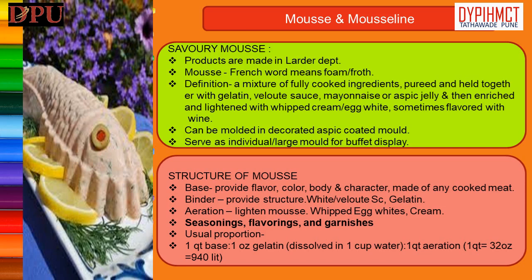2. Binder: It provides structure to the finished product, accomplished by inclusion of gelatin or aspic jelly. Flavorful fat like butter contributes structure as it cools. The following ingredients or sauces are used as a binder: white sauce, velouté sauce, mayonnaise sauce, and gelatin. 3. Aeration or lightener: Lightening of the mousse is done by adding air into the mixture. The lightener can be foam of whipped egg whites, or heavy cream whipped to soft or medium peaks. If the whites or cream are overbeaten, the mousse may start to deflate from its own weight as it sits. 4. Seasonings, flavorings and garnishes are chosen to suit the main ingredient's flavor.